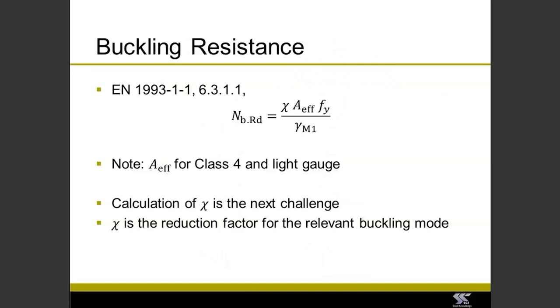In terms of the buckling resistance, the overall equation that we need to use to calculate our buckling resistance is fairly standard. We've got this chi value, and that will be calculated and specific for each different type of buckling. So we have effectively four different values of chi: one for flexural buckling in the major axis, one for flexural buckling in the minor axis, one for torsional buckling, and one for torsional flexural buckling. That's multiplied by the effective area and the basic yield strength divided by gamma M1.